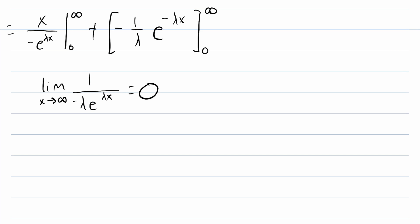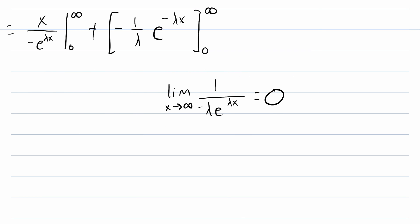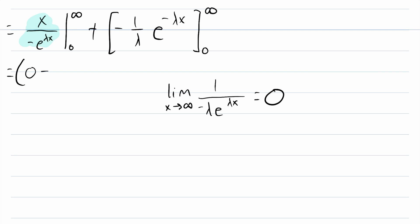The limit equals 0, which means the limit of our original expression as x approaches infinity is also 0. So evaluating from 0 to infinity gives us 0 minus the value at x equals 0. At x equals 0, we get 0 in the numerator, so that term is also 0. We're done with that part.